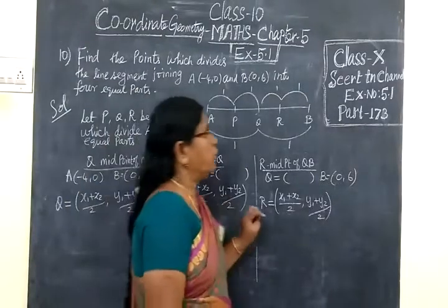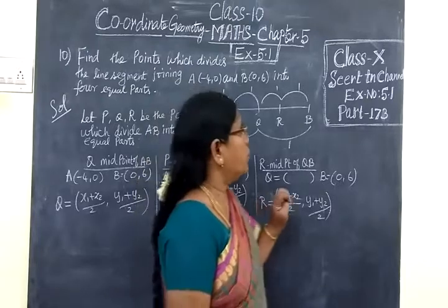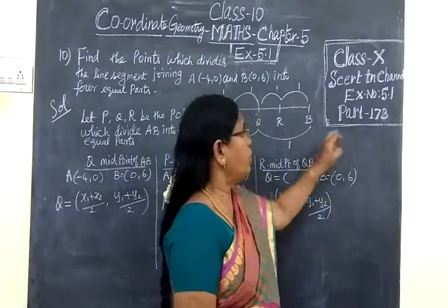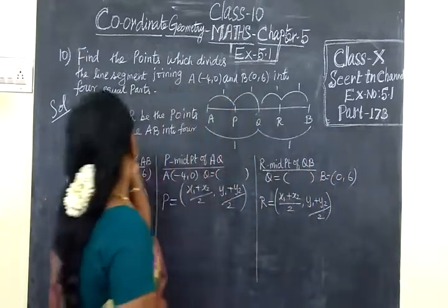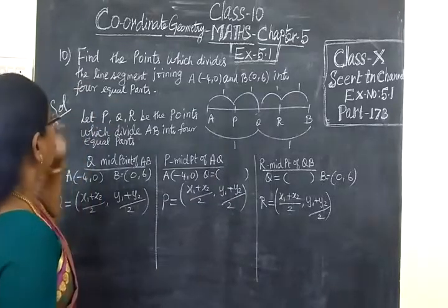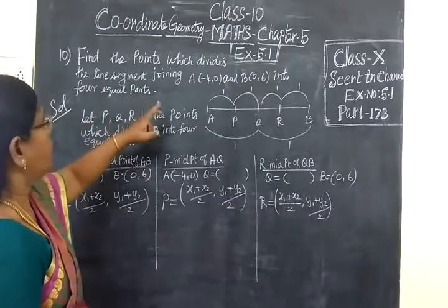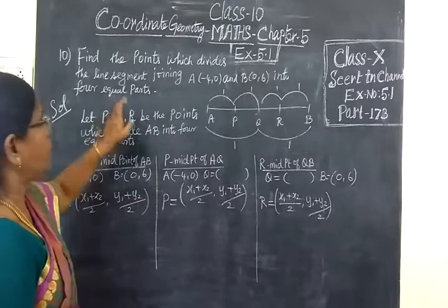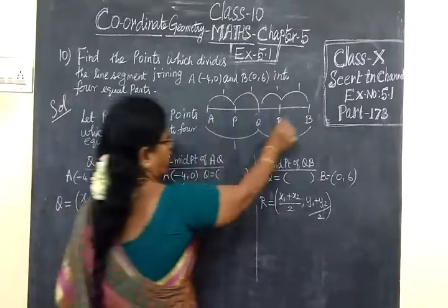Good morning students. Today we are going to see Exercise 5.1, Part 173, Class 10. Find the points which divide the line segment joining A and B into 4 equal parts.